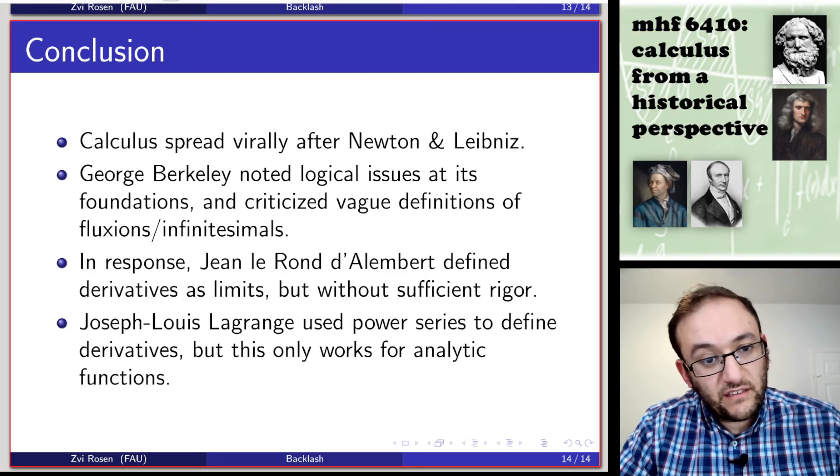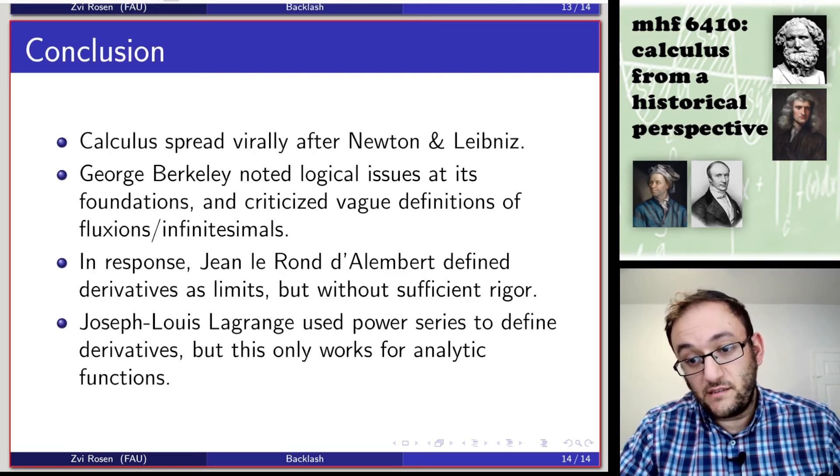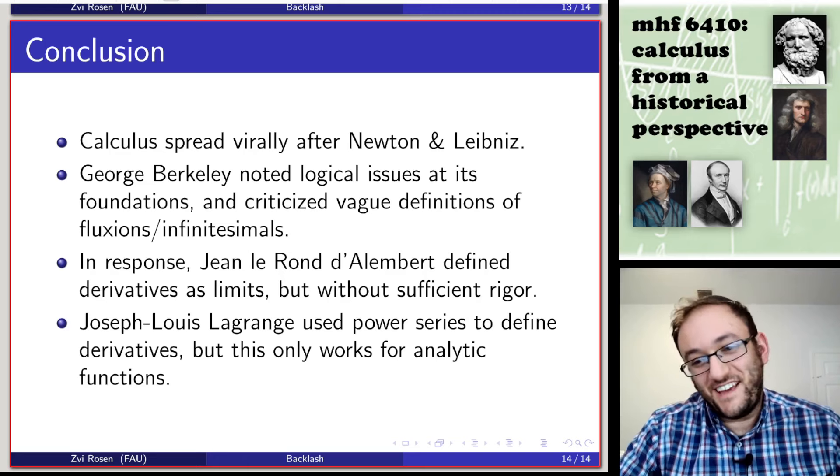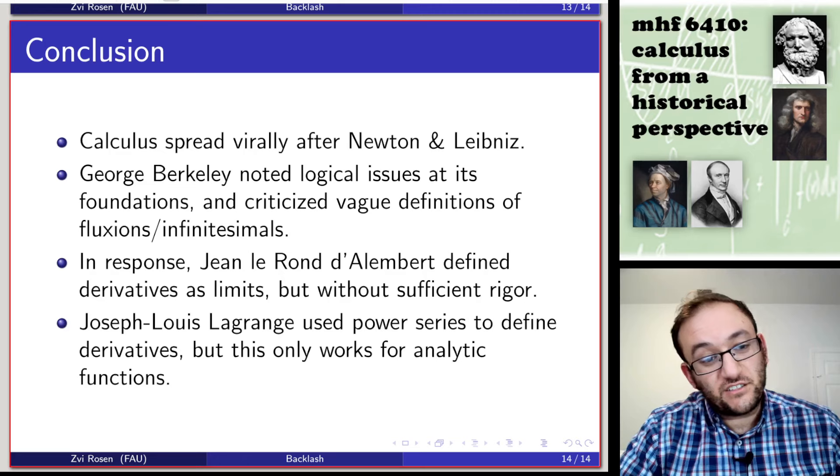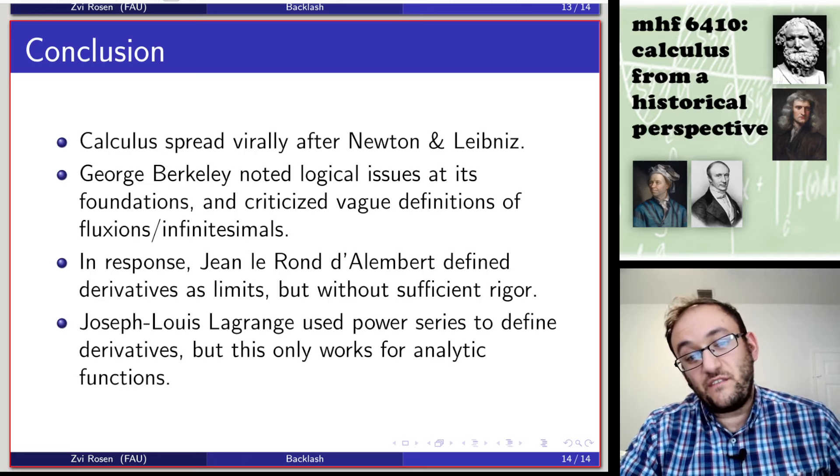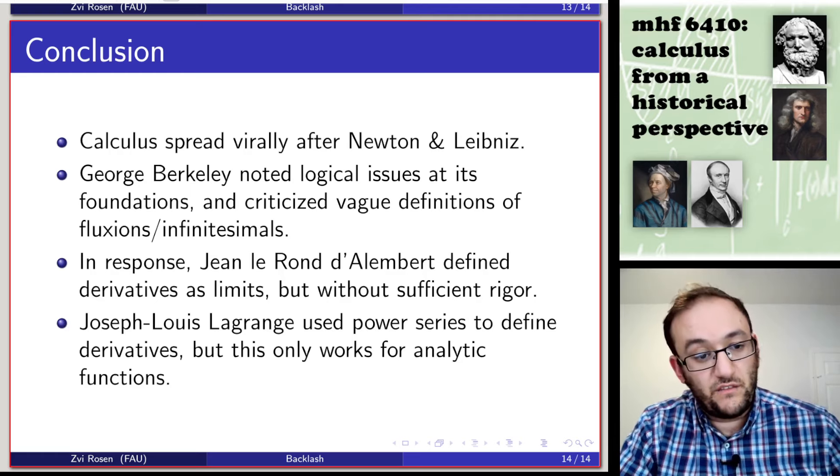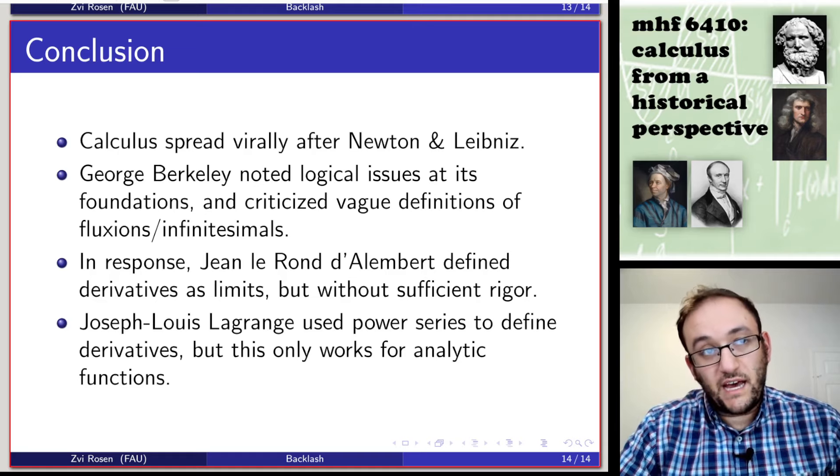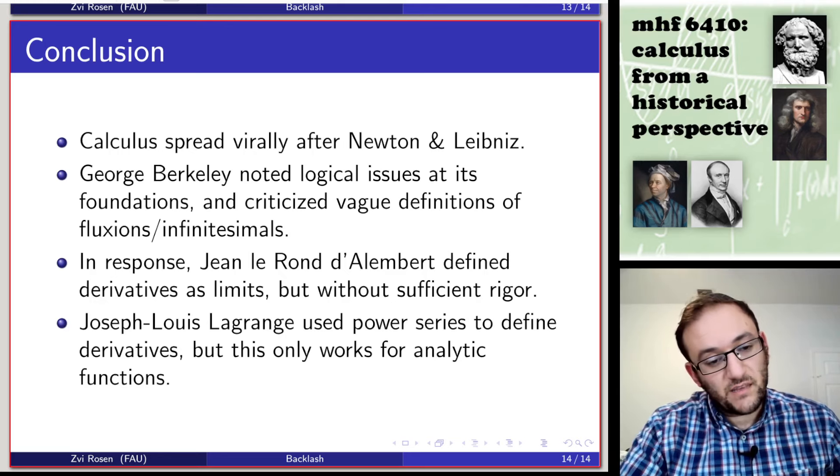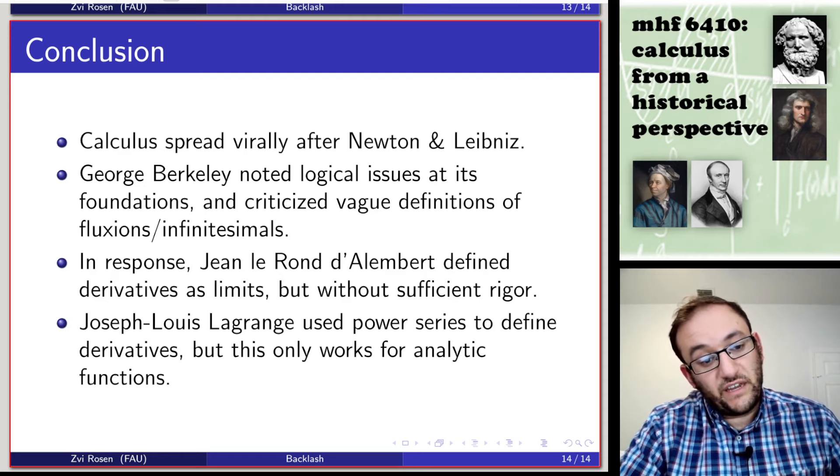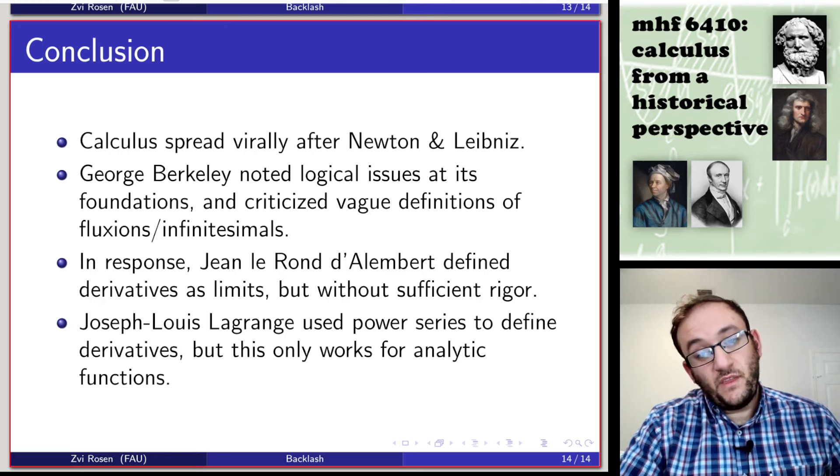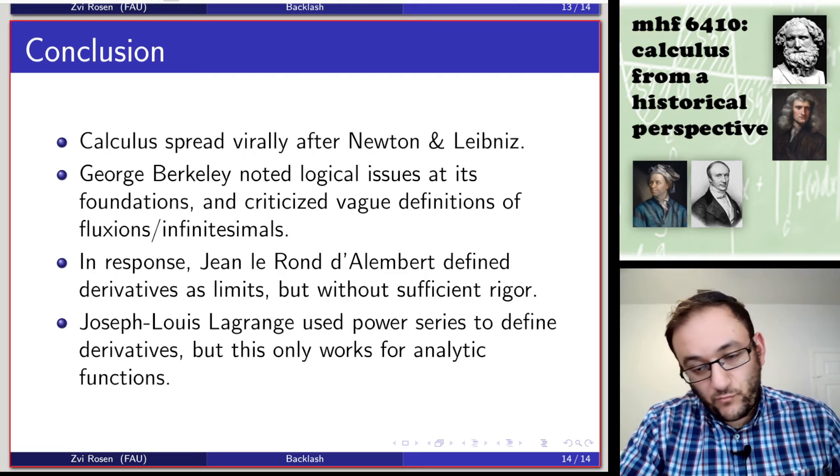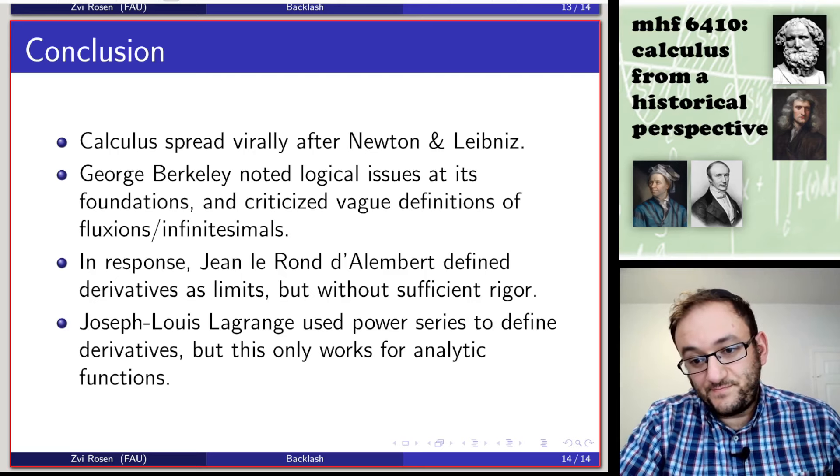In conclusion, the calculus spread virally through Europe after Newton and Leibniz made their respective inventions, mainly because of how powerful it was. But George Berkeley noted logical issues at its foundations, and criticized the vague definitions of fluxions or infinitesimals, depending on the version. In response, Jean-Laurent d'Alembert defined derivatives as limits, but without sufficient rigor to really give it mathematical footing. And subsequently, Joseph-Louis Lagrange used power series to define derivatives, but this only works for analytic functions. And in the next lecture, we're going to see how Augustin-Louis Cauchy came in and revolutionized the whole art of the calculus. Thanks so much for your attention.